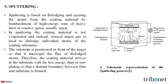Next, let us understand what is sputtering. Sputtering is based on dislodging and ejecting atoms from the coating material by bombardment of high-energy ions of heavy inert or reactive gases, usually argon. In sputtering, the coating material is not evaporated; instead, ionized argon gas is used to dislodge individual atoms of the coating substance. The substrate is positioned in front of the target so that it intercepts the flux of the dislodged atoms. Therefore, the coating material arrives at the substrate with far less energy than in ion plating, so that a distinct boundary between film and substrate is formed.